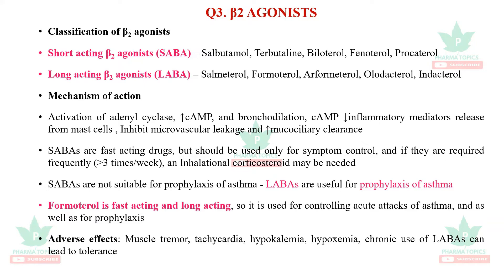Question three is a brief note on beta-2 agonists. There are two types. Short-acting beta-2 agonists, called SABA, include salbutamol, terbutaline, bitolterol, pirbuterol, and procaterol. Long-acting beta-2 agonists, called LABA, include salmeterol, formoterol, arformoterol, olodaterol, and indacaterol.